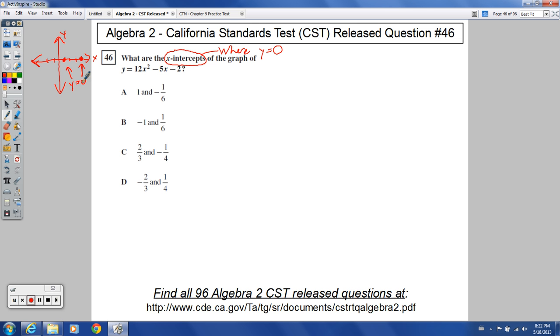y equals 0 for x-intercepts. So that's not what the x-intercepts are here, necessarily. And looking at the answer choices, definitely not what the x-intercepts are here. That's just to realize what to do. What am I going to fill in with y? Well, since y has to equal 0 when I'm talking about x-intercepts, this becomes 0 equals 12x squared minus 5x minus 2.